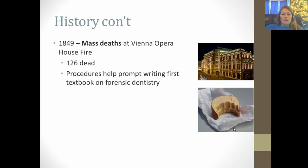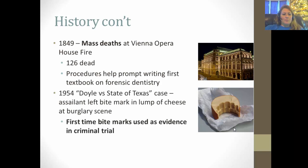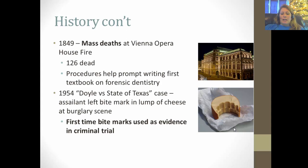One of the big advancements came in 1849 when 126 people died in the Vienna Opera House fire, which prompted development of procedures to identify victims and the writing of the first forensic dentistry textbook. In 1954, there was the first case where bite mark evidence was used — a burglar broke into a home, took a bite out of a lump of cheese, left it on the counter, and they were able to trace that bite mark back to him as a piece of evidence to help convict him.